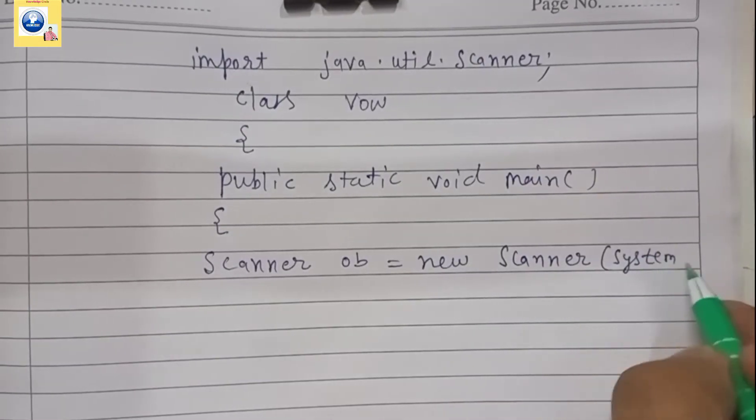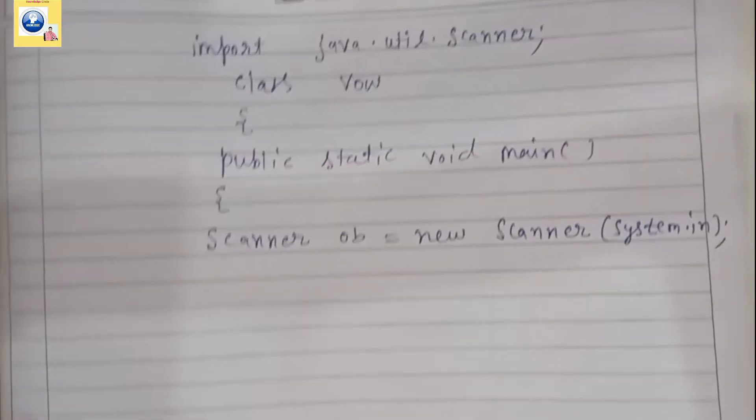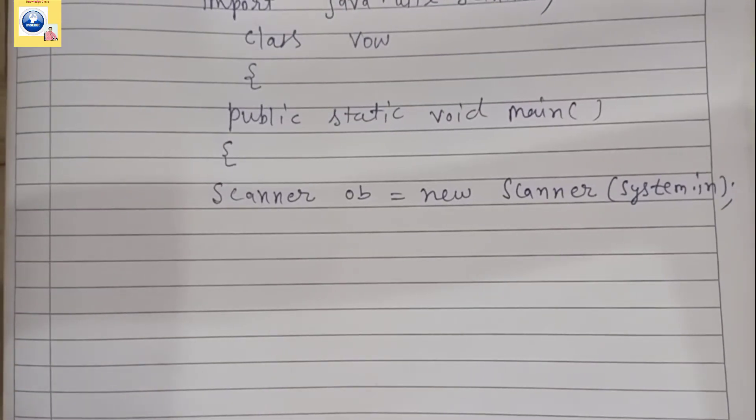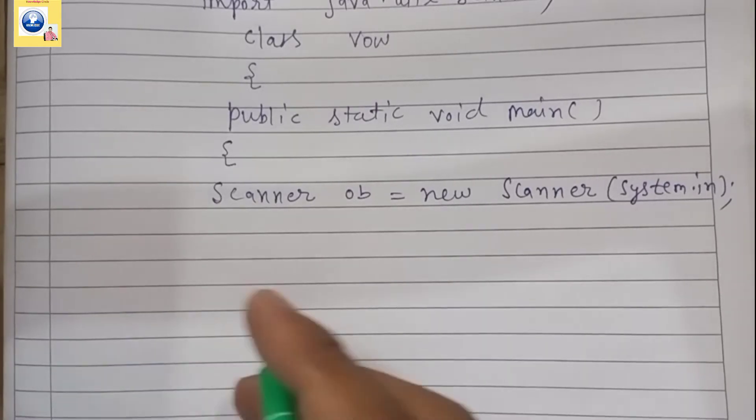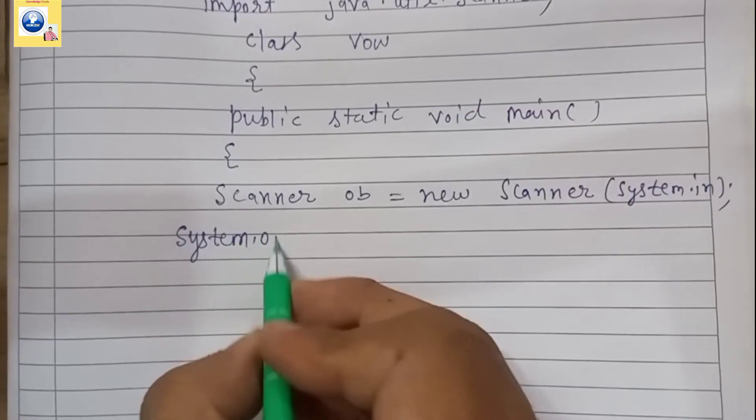And here as an argument we'll write System.in. So after this what we are going to do is we will accept input from user. So we'll give a message to user.